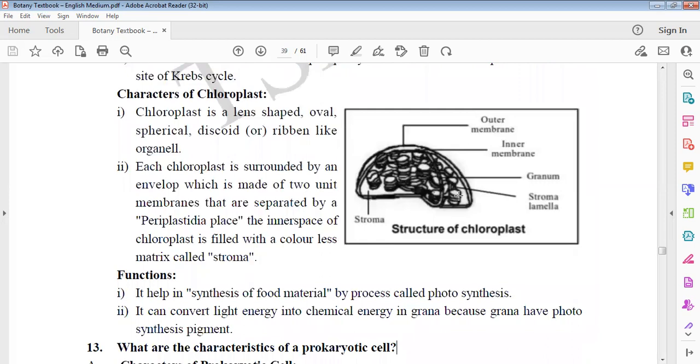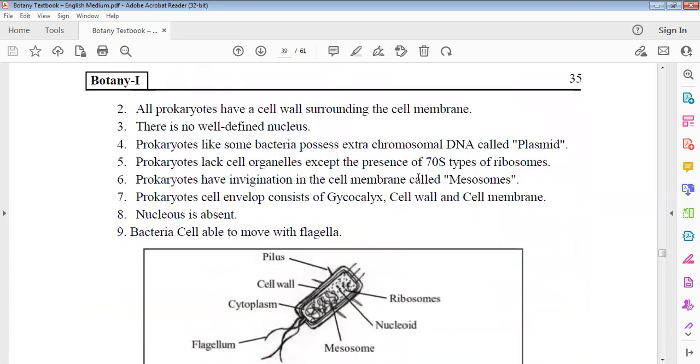Characters of chloroplast. Chloroplast is oval, lens, spherical, round, ribbon, discoid shapes. These are two unit cell organelles - outer membrane and inner membrane. These are periplastidial space. These are thylakoids which are stacked. These are the grana. These are stroma - the fluid remaining. This is all about the structure part.